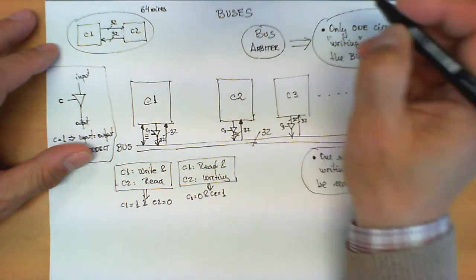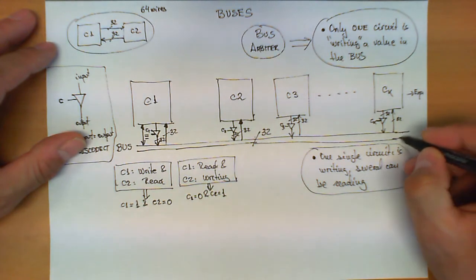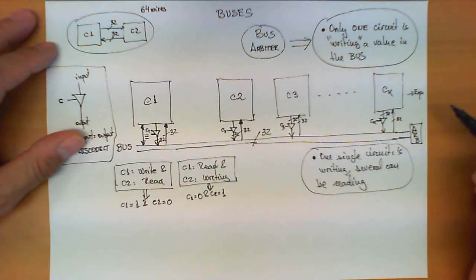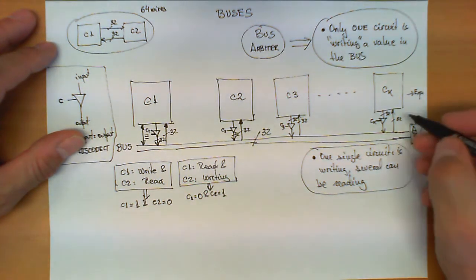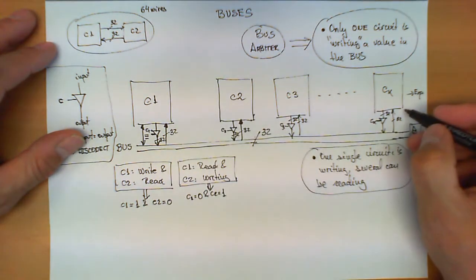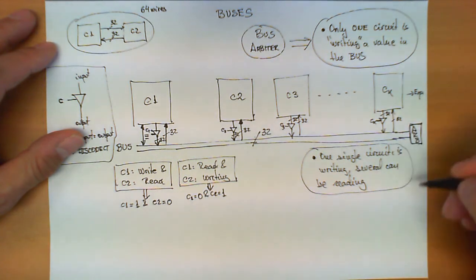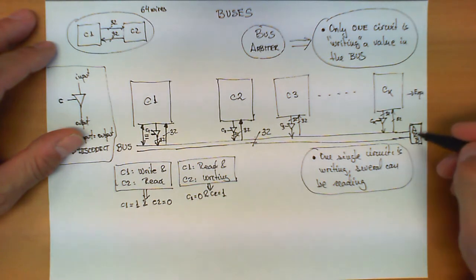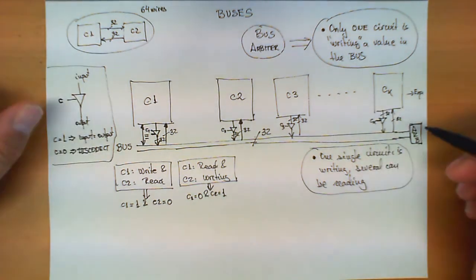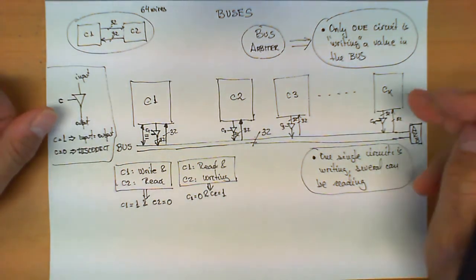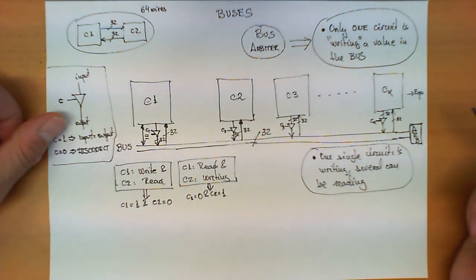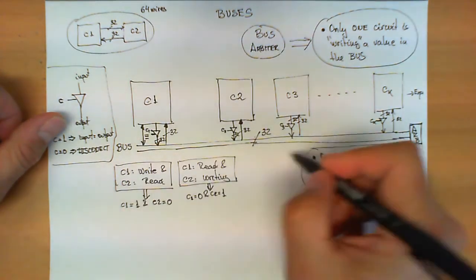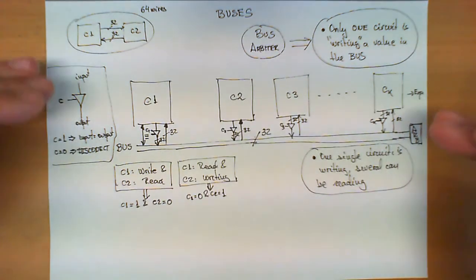Now, the bus arbiter is a circuit, typically it is a circuit that controls the entire bus, and it is a circuit with which all the circuits connected to the bus have to talk to and request the permission to write on the bus. And this circuit is in charge of distributing the access to that bus among all these circuits.